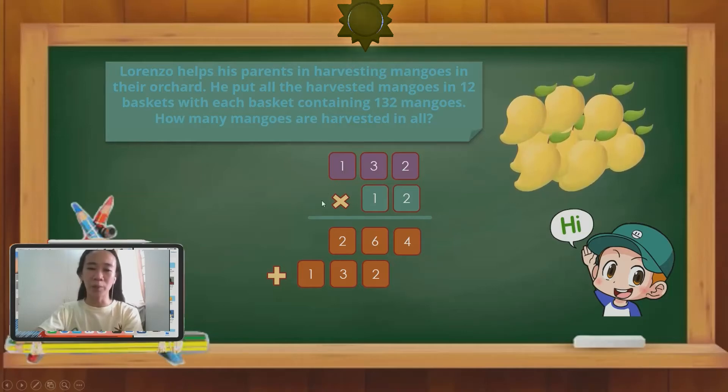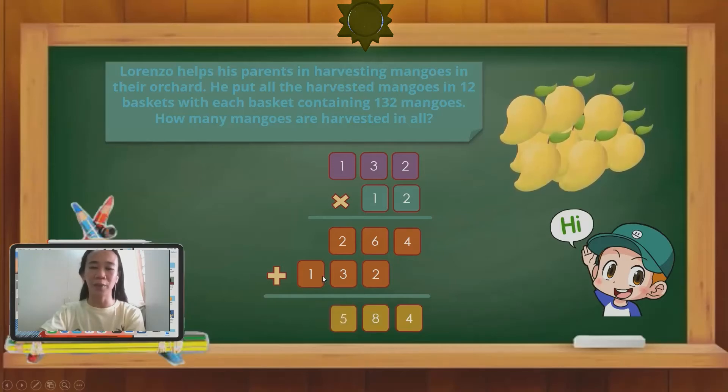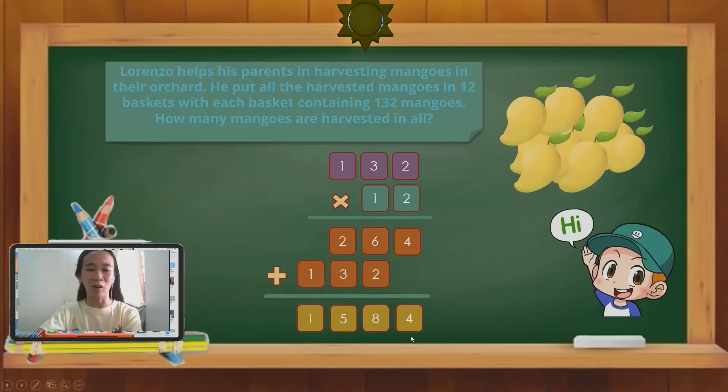Now we are going to add our partial products. So that will be 4. 4 plus 0, 4. 6 plus 2, 8. 2 plus 3, 5. And bring down 1. So 132 times 12 is 1,584. Therefore, there are 1,584 mangoes harvested in all.